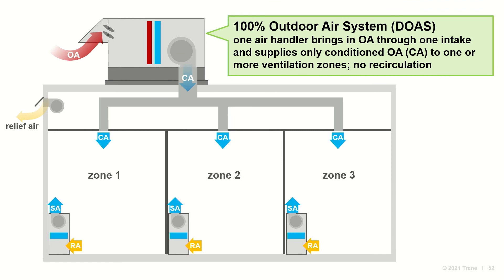In a 100% or dedicated outdoor air system, one air handler serves the ventilation needs of more than one zone. Outdoor air enters through the intake and is delivered to the zones without mixing with any recirculated air — the dedicated outdoor air unit delivers only outdoor air, not a mixture of outdoor and recirculated air.